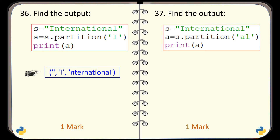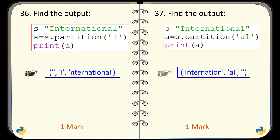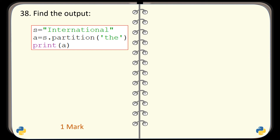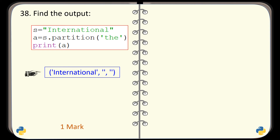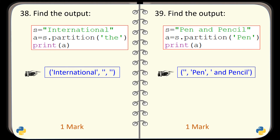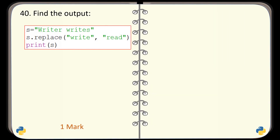And this is the output generated by this code. And this is the output. And this is the output. Question number 39. Again, a code is given and you have to find the output. And the correct output is this one.